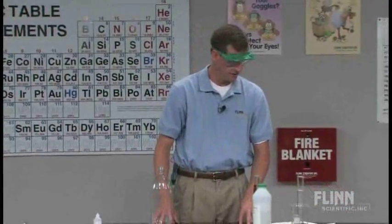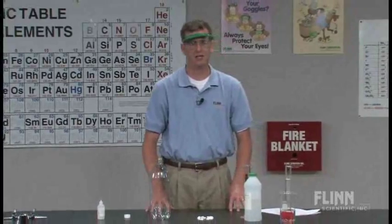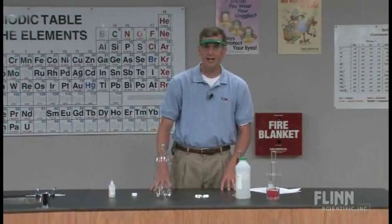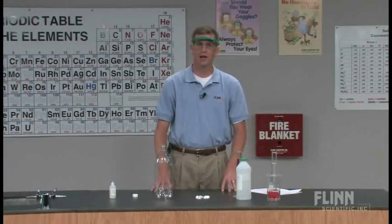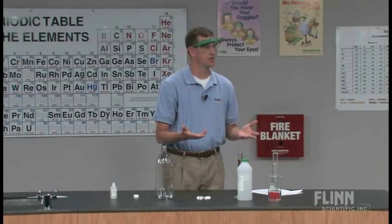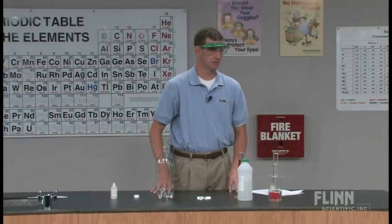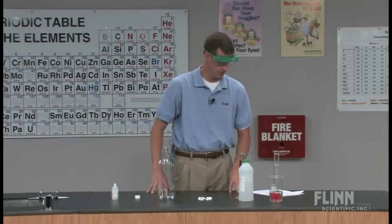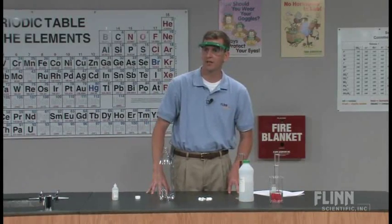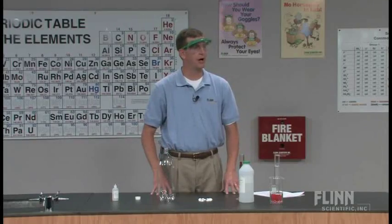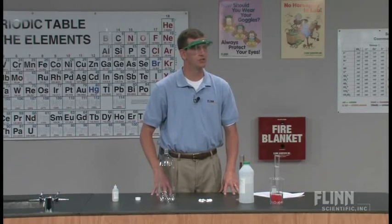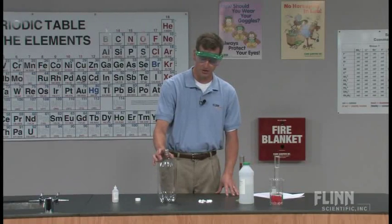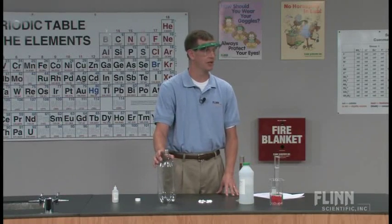What this demonstration will exemplify is an exothermic reaction having a negative delta H with a negative entropy change. As we know, the release of energy is favorable to the universe — it's a natural process, the one that's most favored. The universe moves towards entropy, so a positive delta S is usually favored. In this particular demonstration, we're going to see a negative delta H and we're also going to see a negative delta S.